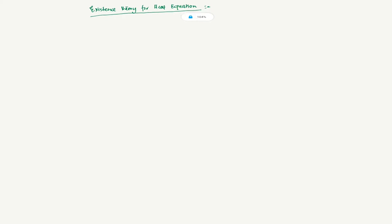So let's say you are given the equation u_t minus the Laplacian of u equals zero, for x in R^n cross time variable (0, infinity). What sort of functions satisfy this equation? For example, u(x,t) equals any constant k, where k is in R — that solves the equation. It's not very difficult to see.